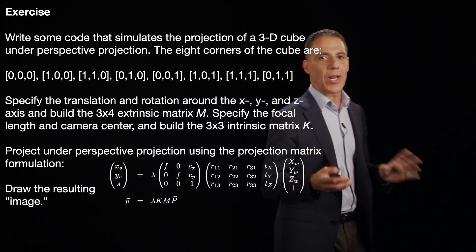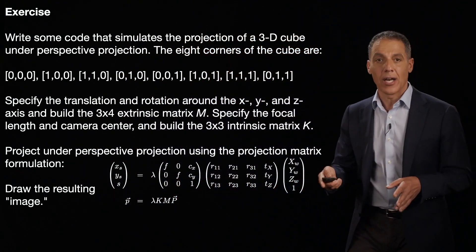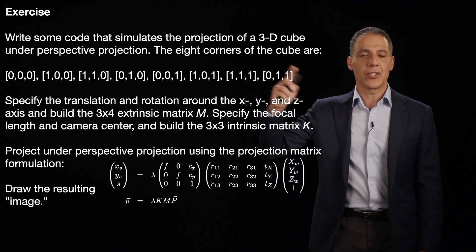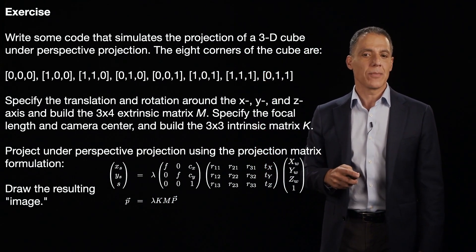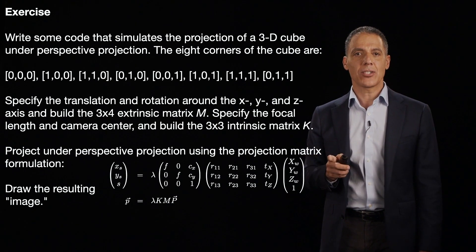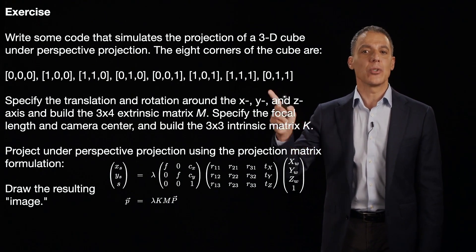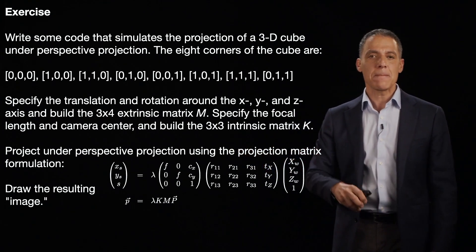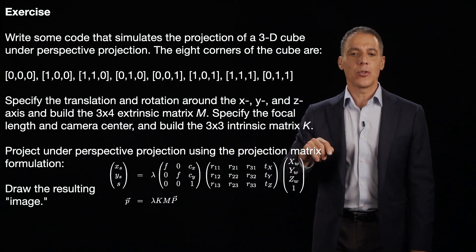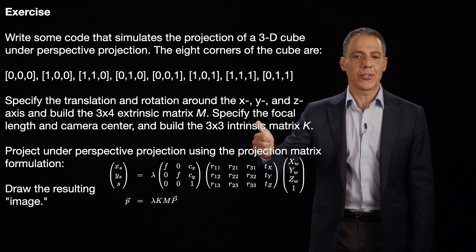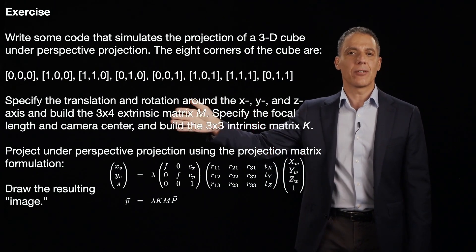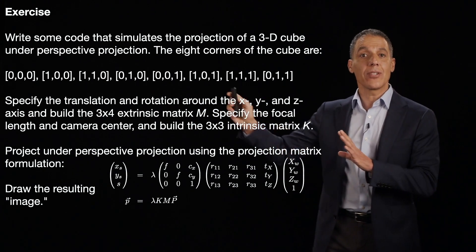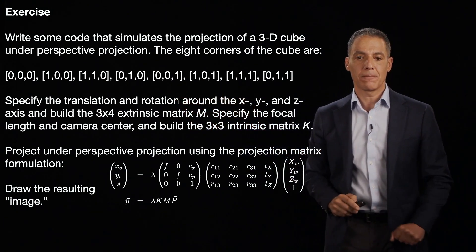Let's do an exercise. This is a great way to make sure you understand these transformation matrices and projections. Write some code that simulates the projection of a 3D cube under perspective projection. The eight corners of the cube are 0,0,0, 1,0,0, et cetera. So, just think the eight corners of a cube. Those are your points in the world coordinate system.